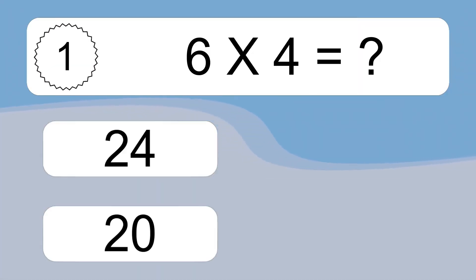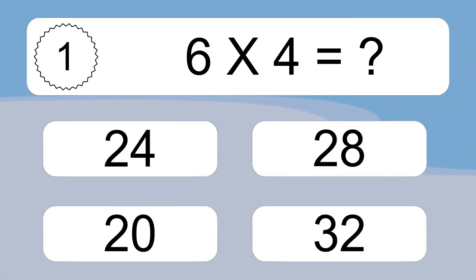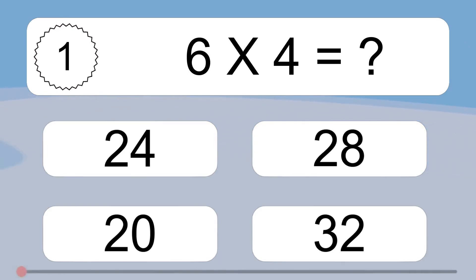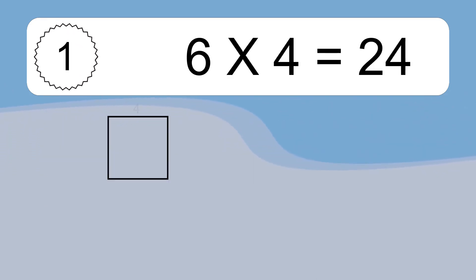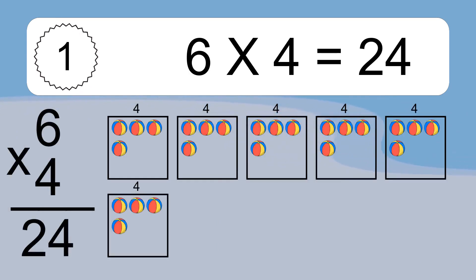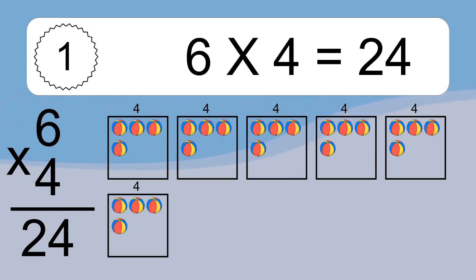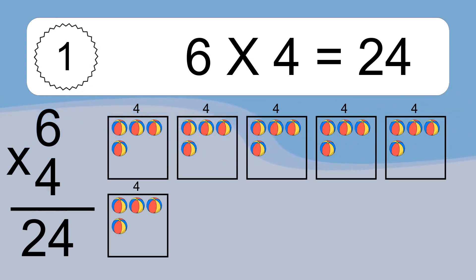Six times four equals what? Six times four equals twenty-four. We have six boxes, and each box has four colorful balls inside. If you count all the balls in all the boxes together, you will have six times four balls. This equals twenty-four balls.